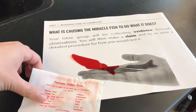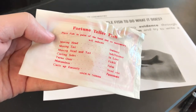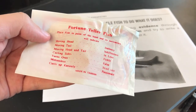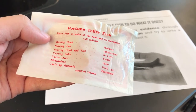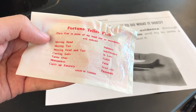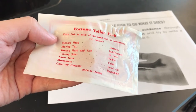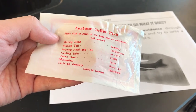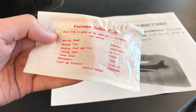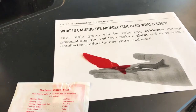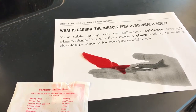In case you haven't seen a miracle fish before, what you do is put it in the palm of your hand and how it moves tells you what kind of person you are. So it's kind of like a fortune-telling thing. But obviously we don't believe in good fortunes in science, so I want you to figure out what you think might be causing the movement of the fish.